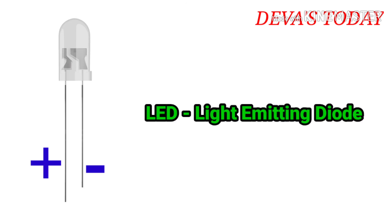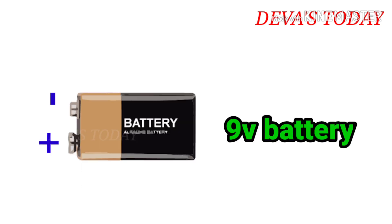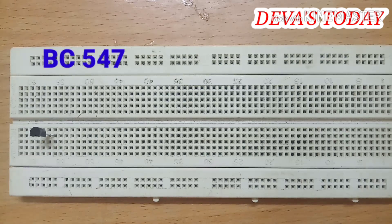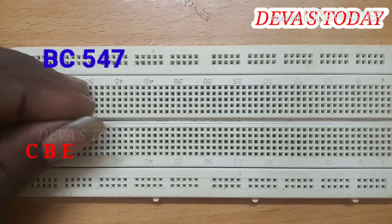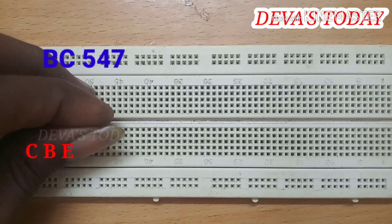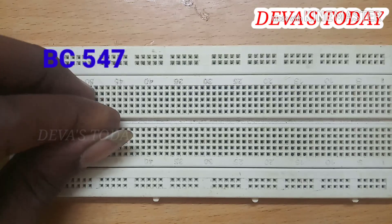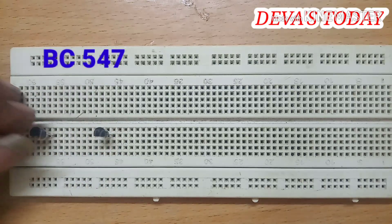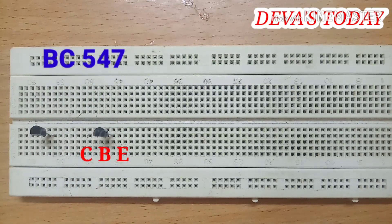This is the LED. This is the cathode. This is a 9V battery. In the BC547, the first pin is the collector, the center pin is the base, and the third pin is the emitter.